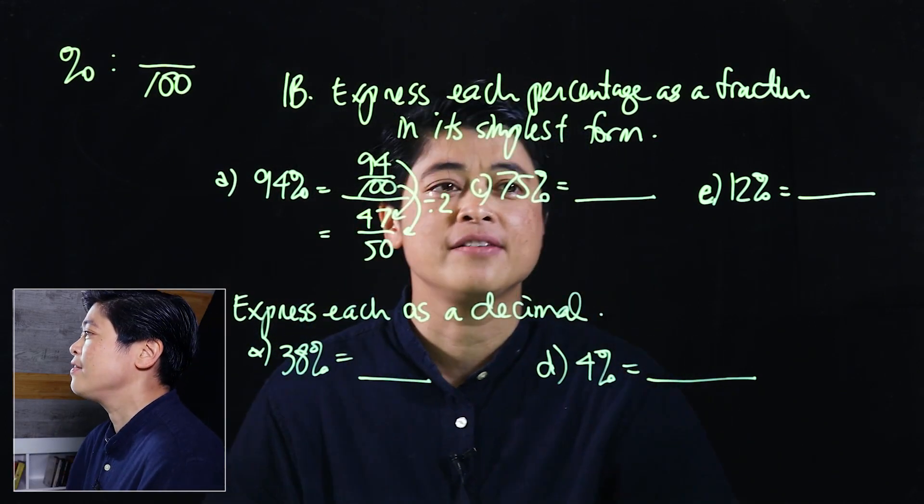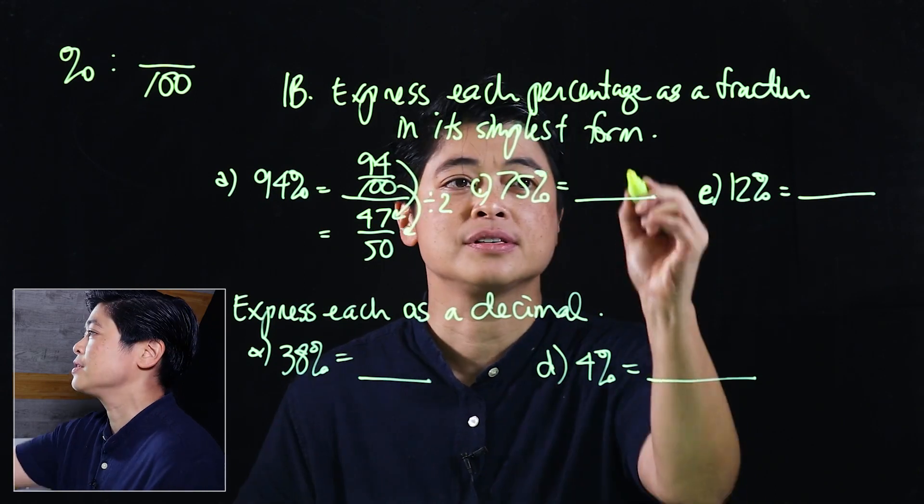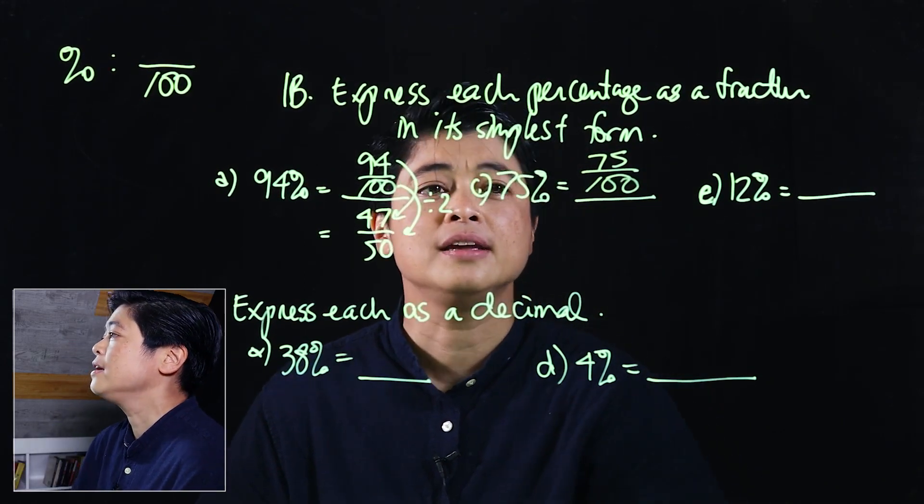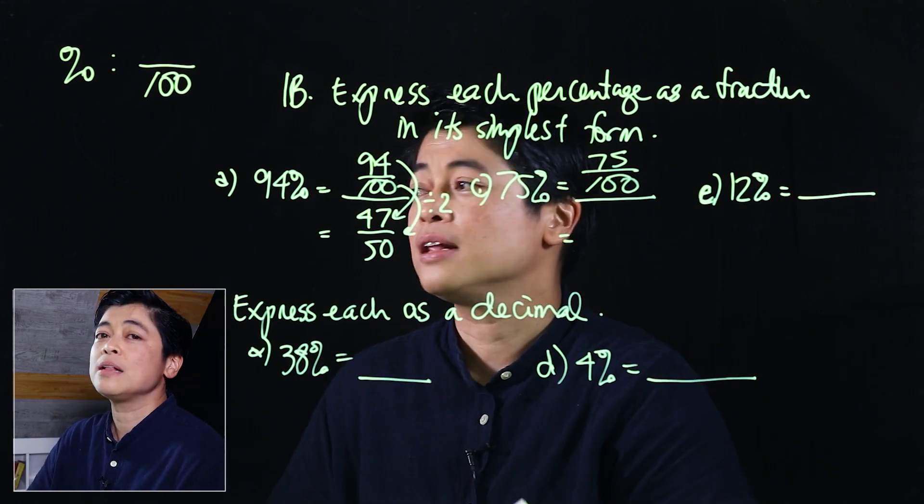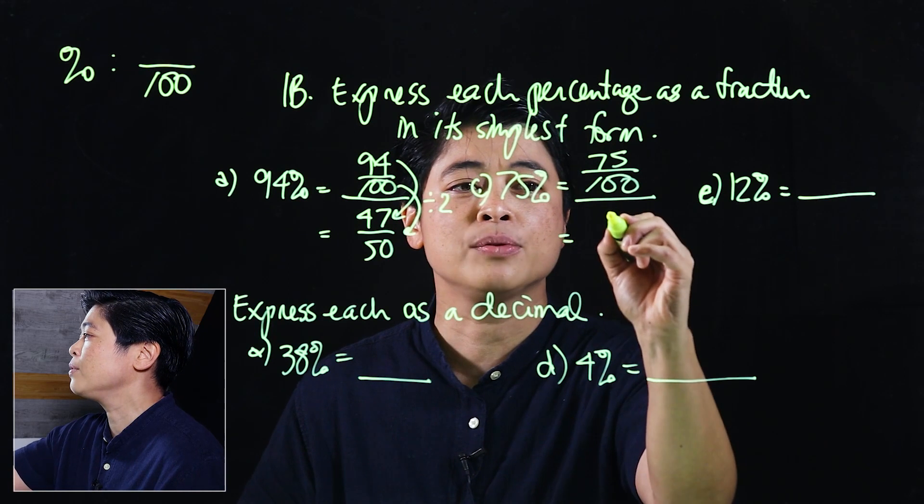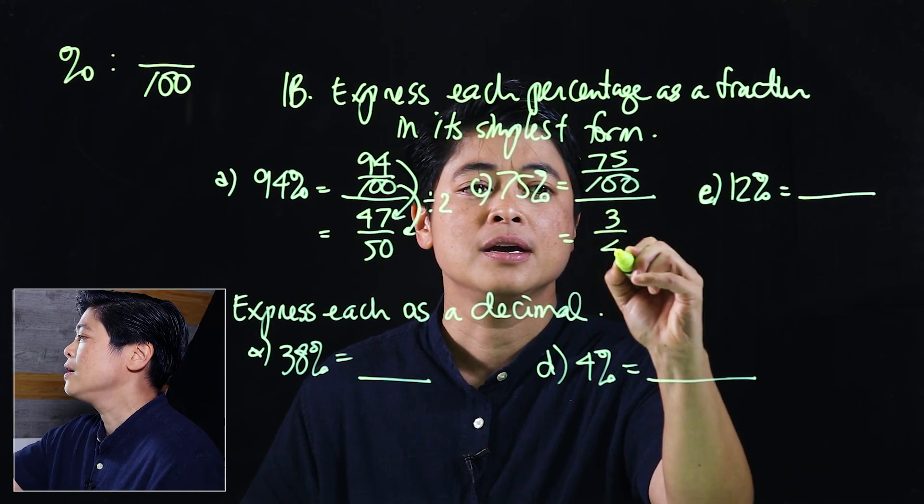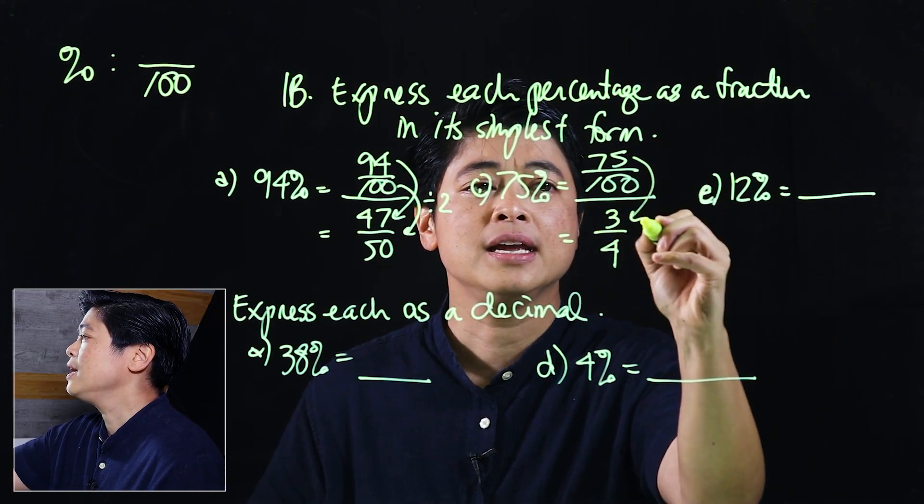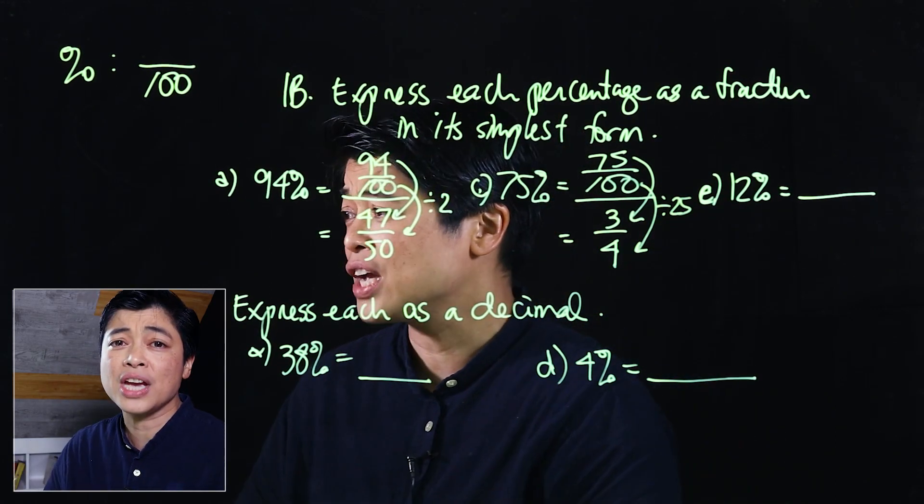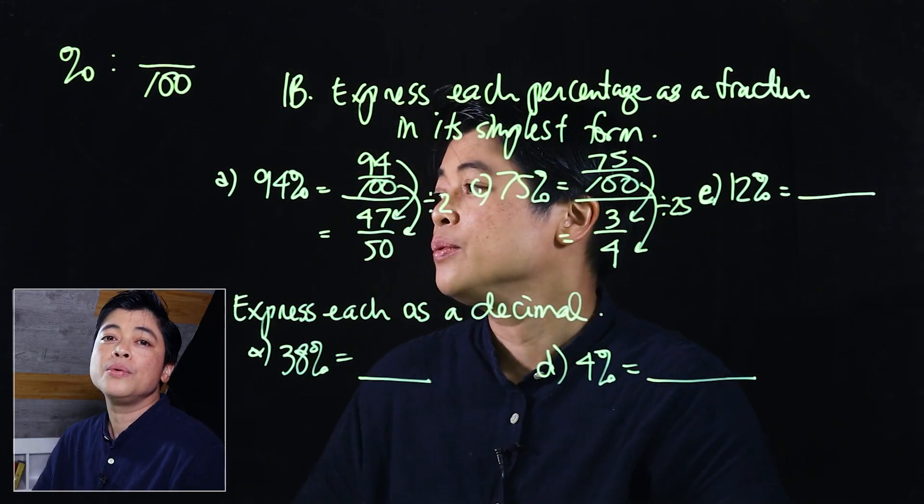Moving on to c, it says 75%. So 75% is over 100, which means I know that both of those can be divided by 25. If I divide by 25 that will be 3 over 4. It's helpful to show what we're dividing so that if we're checking our work after we can tell if we got it right or not.